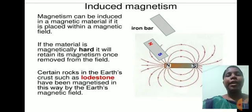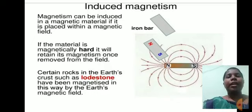Magnetism can be induced in a magnetic material if it is placed within a magnetic field. If the material is magnetically hard, it will retain its magnetism once removed from the field. Certain rocks in the Earth's crust such as lodestone have been magnetized in this way by the Earth's magnetic field.